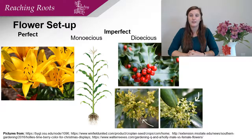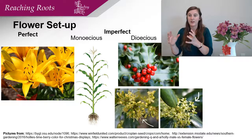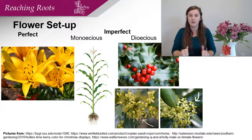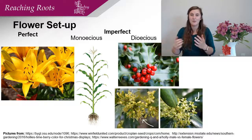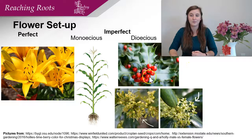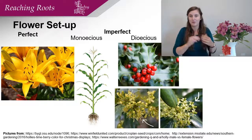The other type of imperfect flower is dioecious — we can think 'di' meaning two. These types of plants have a whole plant with many different flowers and all of them only have female parts, and another individual plant will have many different flowers but they all only have male parts. That means that if you want reproduction to occur, you'll need two different plants, one being male and one being female. Most plants are not dioecious, but examples include holly and ginkgo trees. So you need two for reproduction.